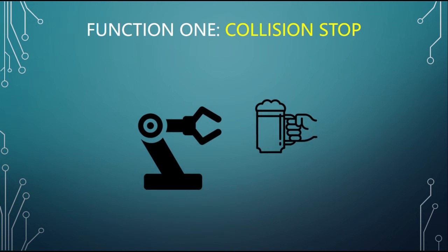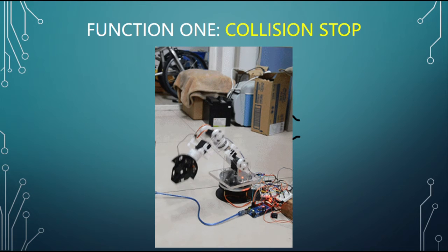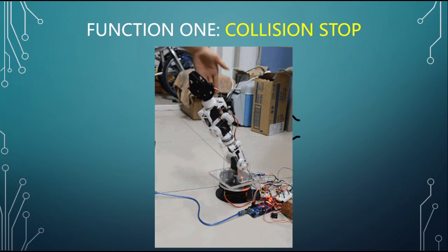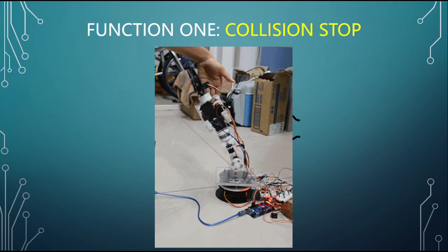The video is demonstrating the manipulator hitting an obstacle. The arm will stop and move backward a small distance.